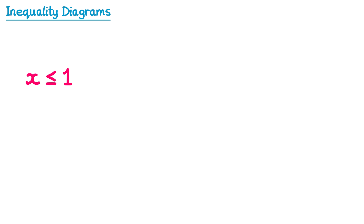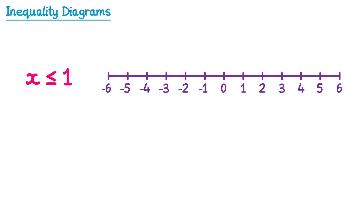Now we'll try x is less than or equal to 1. We start by drawing a circle above the number 1, and then we draw an arrow to the left since we need to be less than 1. But there's one more thing we need to do — this inequality said less than or equal to 1, but at the moment this looks just like a diagram for x is less than 1. To identify that this one's less than or equal to 1, we shade in the circle instead. This indicates that the number 1 is included in this inequality.